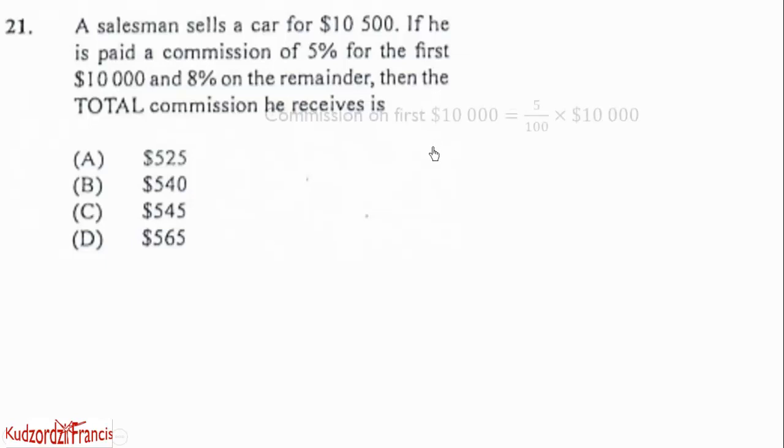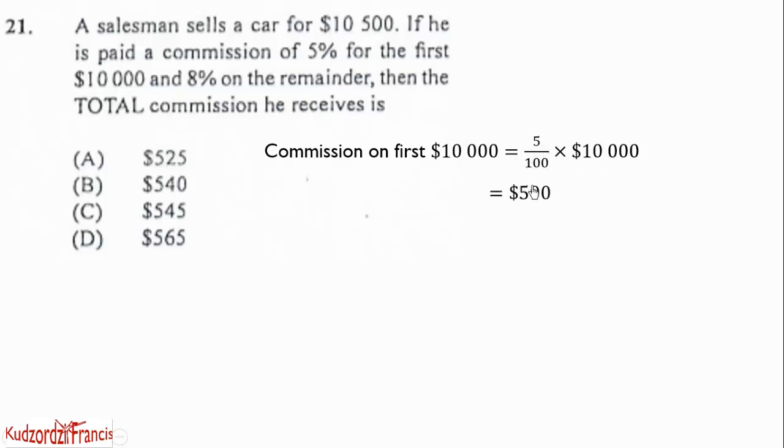We know the commission on the first $10,000 is 5%. So we calculate 5% of $10,000 and that will give us $500. Because when we cancel out this, this will go here 100 times, then 5 times 100 will give us $500.